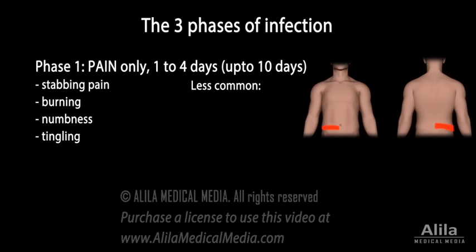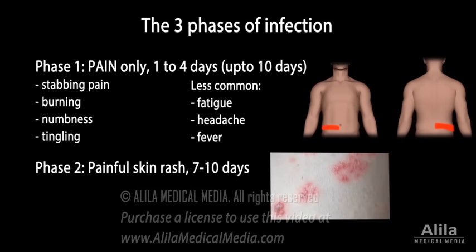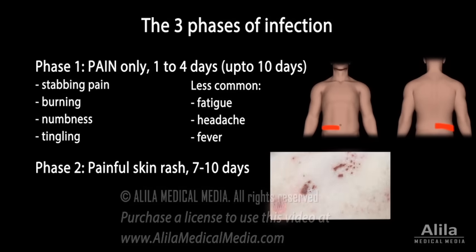Less common symptoms include fatigue, headache, and fever. A painful skin rash appears in phase 2, a few days after the pain. The rash starts as small red dots, which develop into fluid-filled blisters. As the blisters follow the nerve path, they form a stripe on one side of the body. The blisters eventually dry out and crust over.